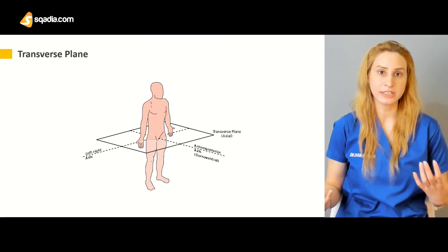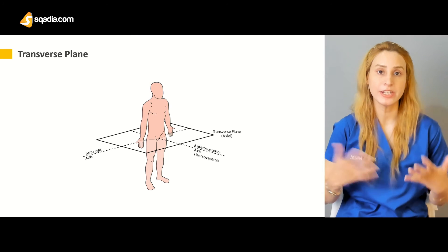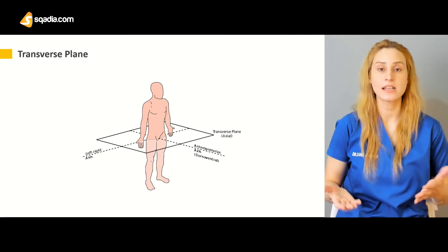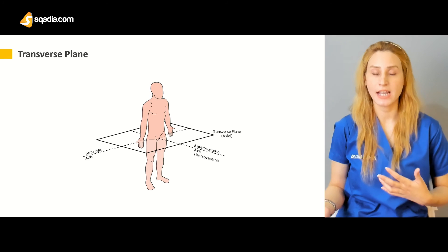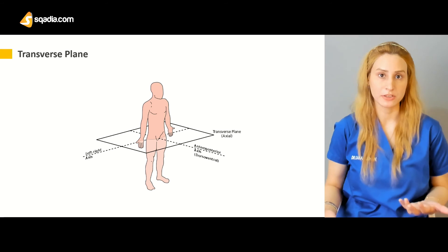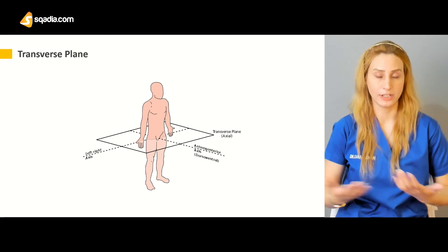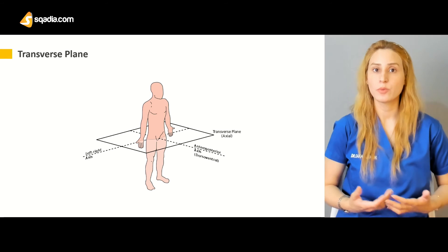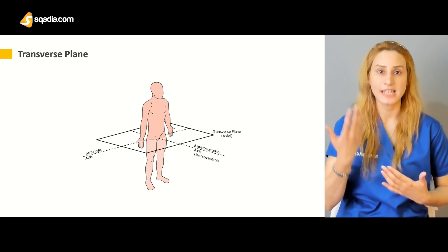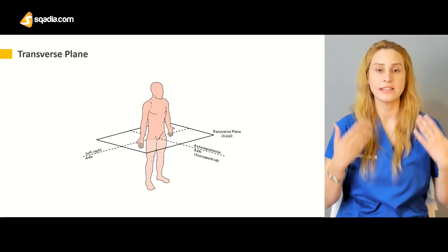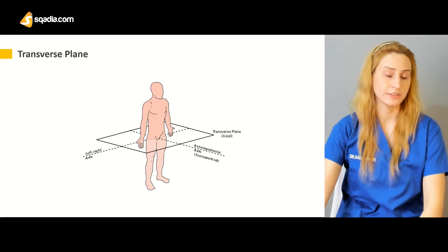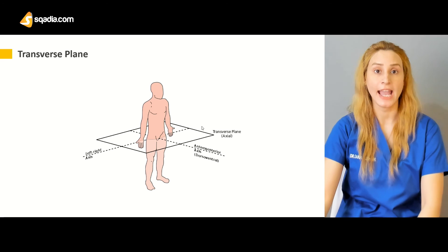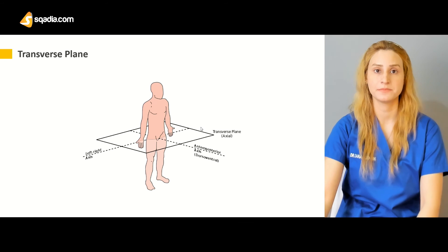So these are mainly the three important planes which we divide and use as anatomical planes or landmarks: one is the sagittal plane, the other is the coronal plane, and the other is the axial or transverse plane.